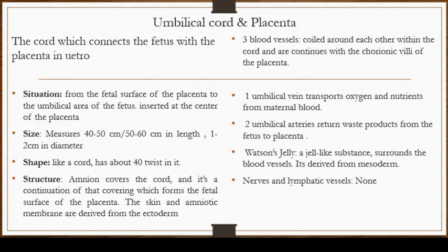Looking at the structure, the amnion covers the cord and it is a continuation of that covering which forms the fetal surface of the placenta and the skin. The amniotic membrane is also derived from the ectoderm.